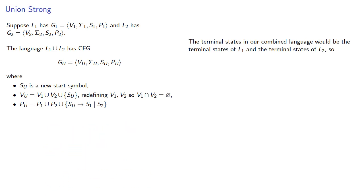The terminal states in our combined language would be the terminal states of L1 and the terminal states of L2. So the terminal states of our union is the union of the terminal states. Or is it? Remember, with variables we required, relabeling as necessary, that the sets of variables be disjoint. Do we need to do the same thing with terminal symbols?